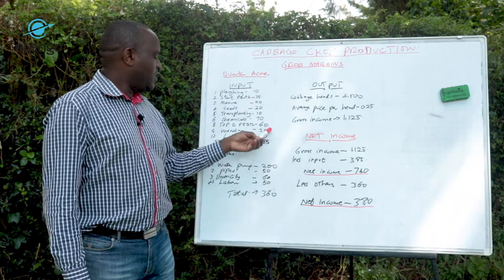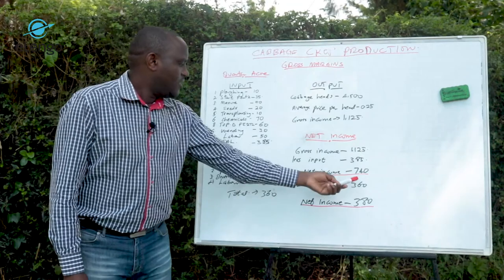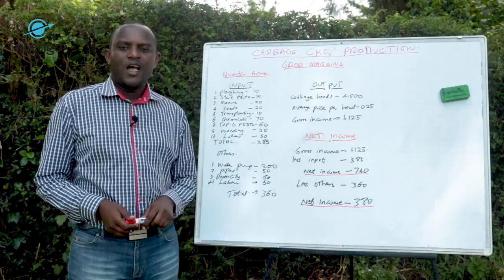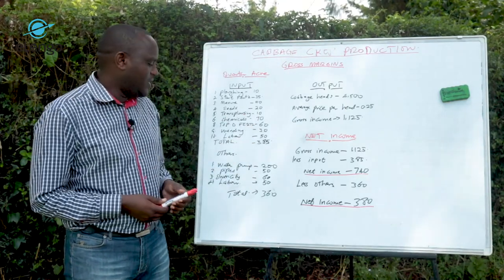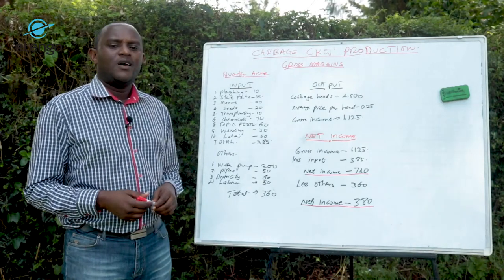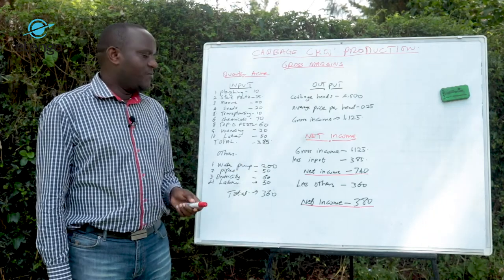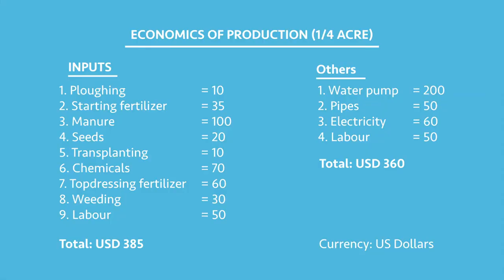So if you are doing a quarter of an acre and have all the inputs including the water pump, within three months you will cater for everything including the $360, and still get $380 as net income. For the next planting, that water pump and pipe cost won't be there. The recurring irrigation cost will only be $60 for electricity and $50 for labor — that's $110. So from the $740 gross, you subtract just $110, giving you $630 as the net income.